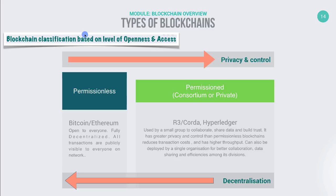For all the benefits that public blockchains offer, they still don't meet the requirements of enterprise customers. Due to this, there has been a divergence in the architecture of blockchains, which has led to the creation of a new category called permissioned blockchains. Both permissionless and permissioned blockchains are decentralized P2P networks where each participant maintains a replica of a shared ledger with digitally signed transactions. Both maintain the data in sync across nodes through a protocol called consensus, and both provide guarantees on the immutability of the ledger.